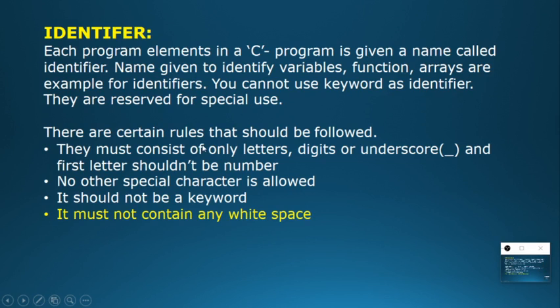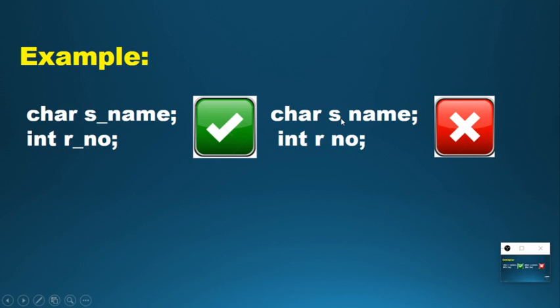The fourth rule is: the identifier must not contain white space. You should not leave any space in a variable name. For example, 's_name' is accepted but 's name' with a space is not. Similarly, 'r_number' is accepted but 'r number' with a space will show as an error.